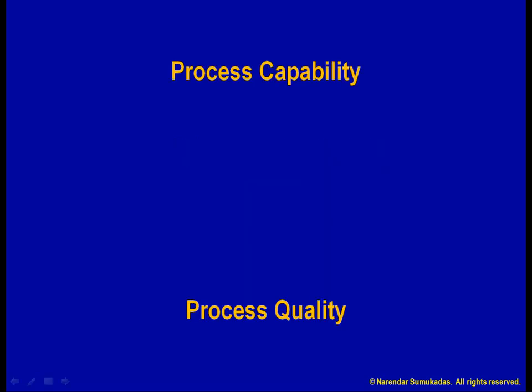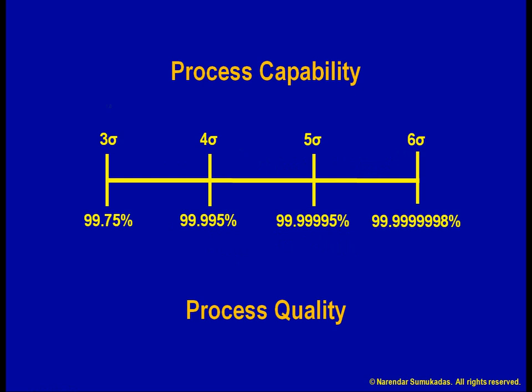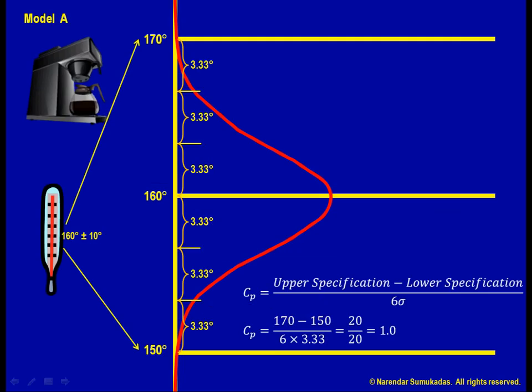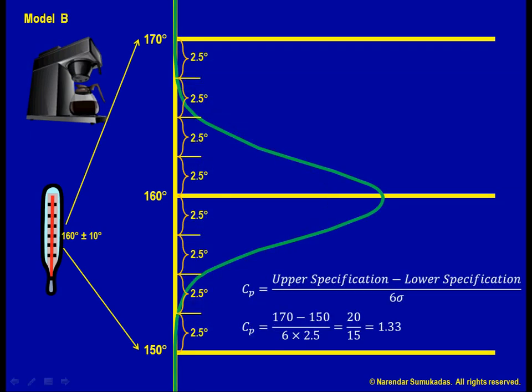When comparing coffee machine models A and B, we see that going from a CP of 1.0 to 1.33 reduces defects from 1 out of 400 to 1 out of 20,000. To achieve that, we reduce the process standard deviation from 3.33 degrees to 2.5 degrees.